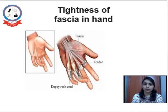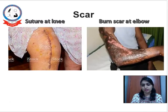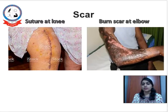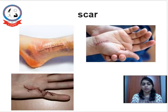Here is another example of tightness of fascia in the hand — because of that there is Dupuytren's contracture. If there is a scar on the skin, that can also limit the range of motion, whether it is a surgical suture scar after surgery, or a bone scar. In either case, there is a restriction in range of motion at whatever joint the scar is passing through.